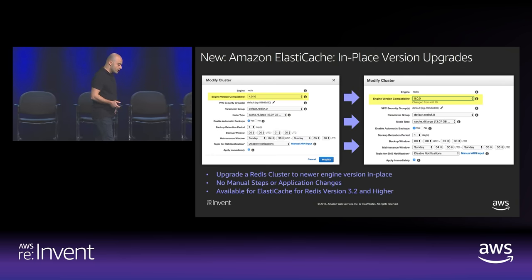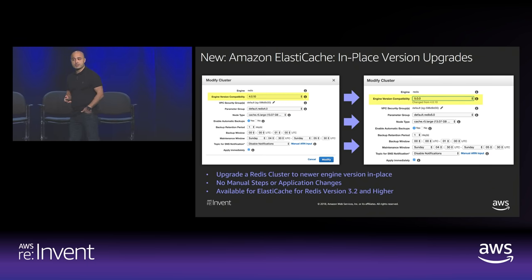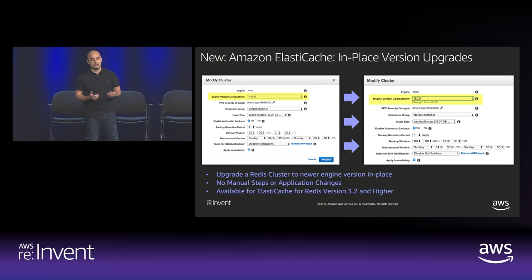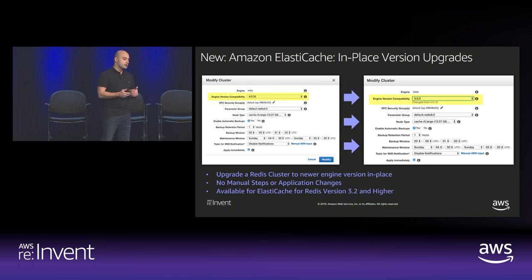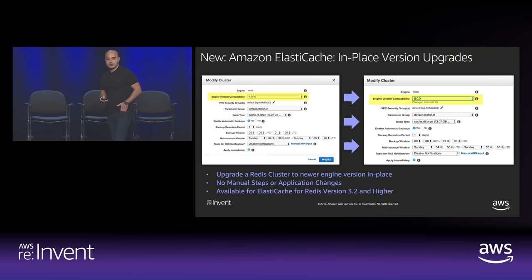In addition to the Redis updates, there are a lot of ElastiCache updates since last year. In-place version upgrades — if you're on Redis 3.2 or Redis 4 and you're using cluster mode enabled or not, you can upgrade the version without any manual steps or application changes. We'll upgrade your replicas and then fail over to those replicas, taking care of that operation for you.